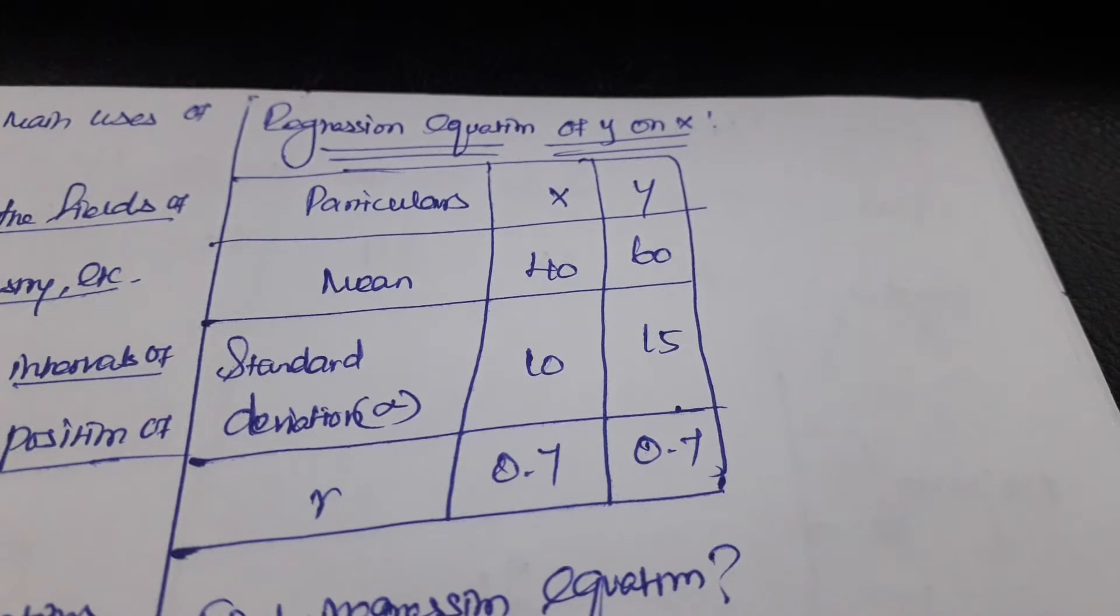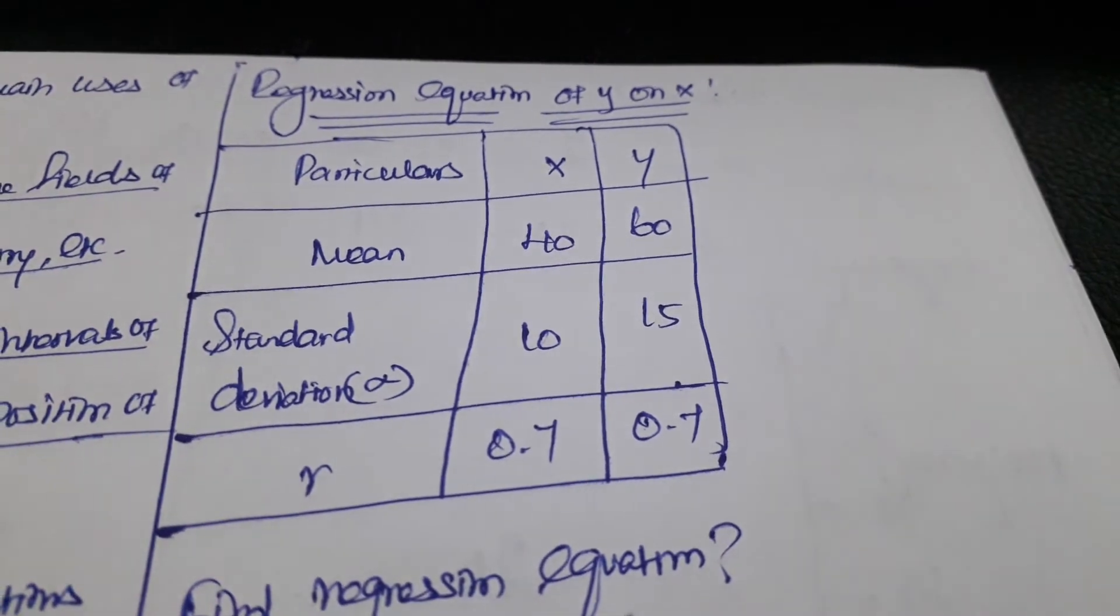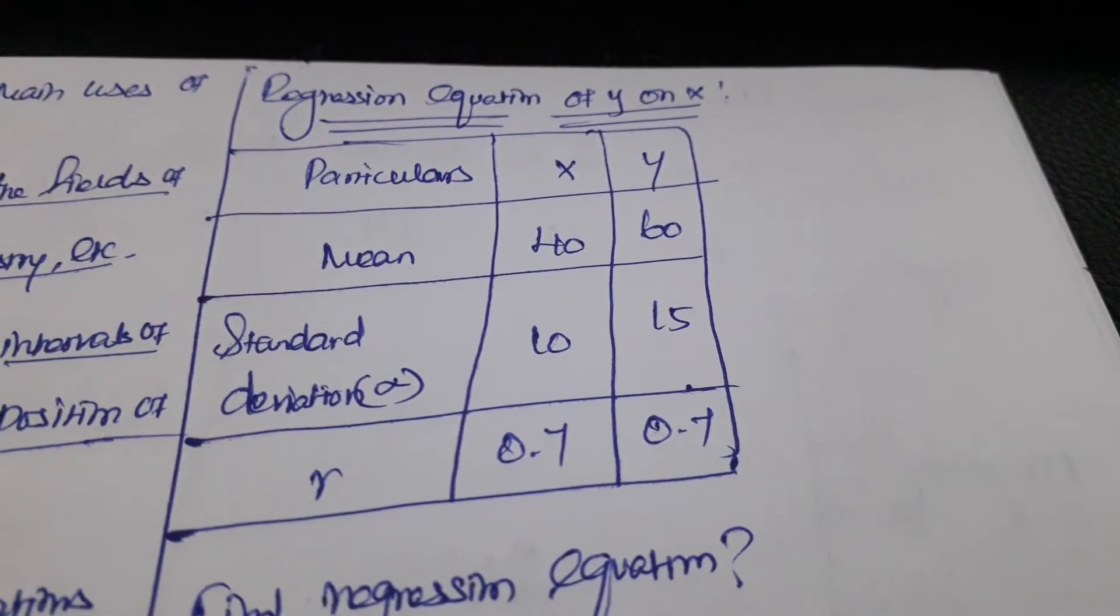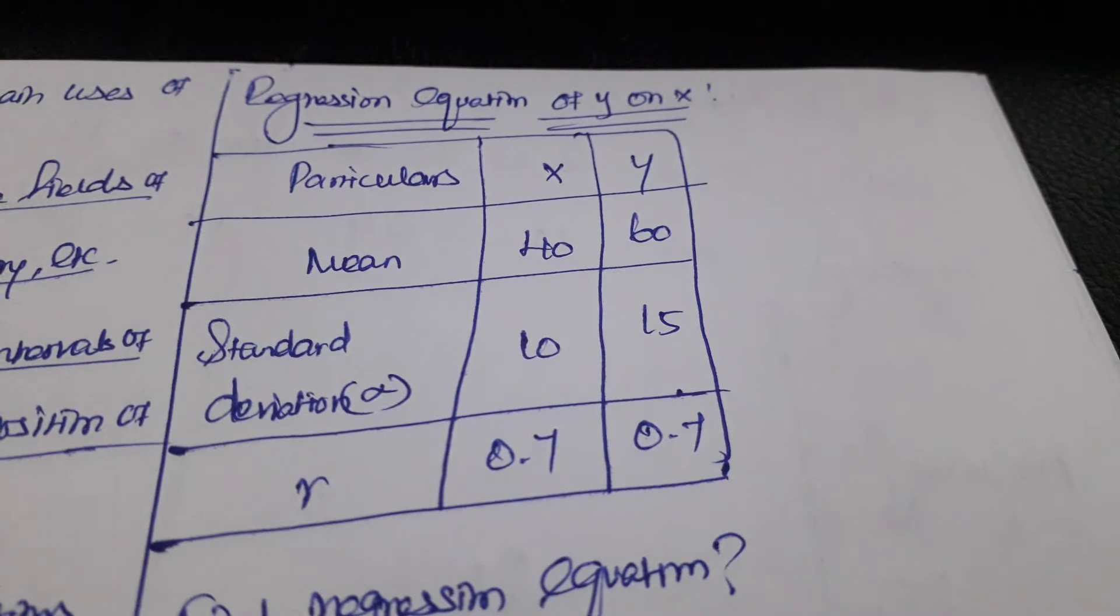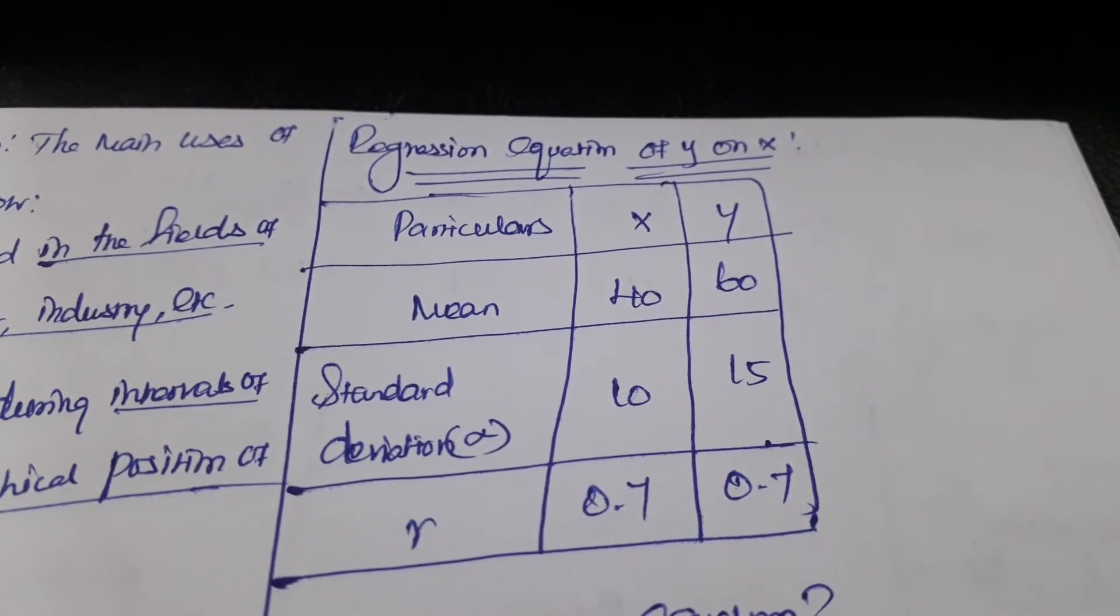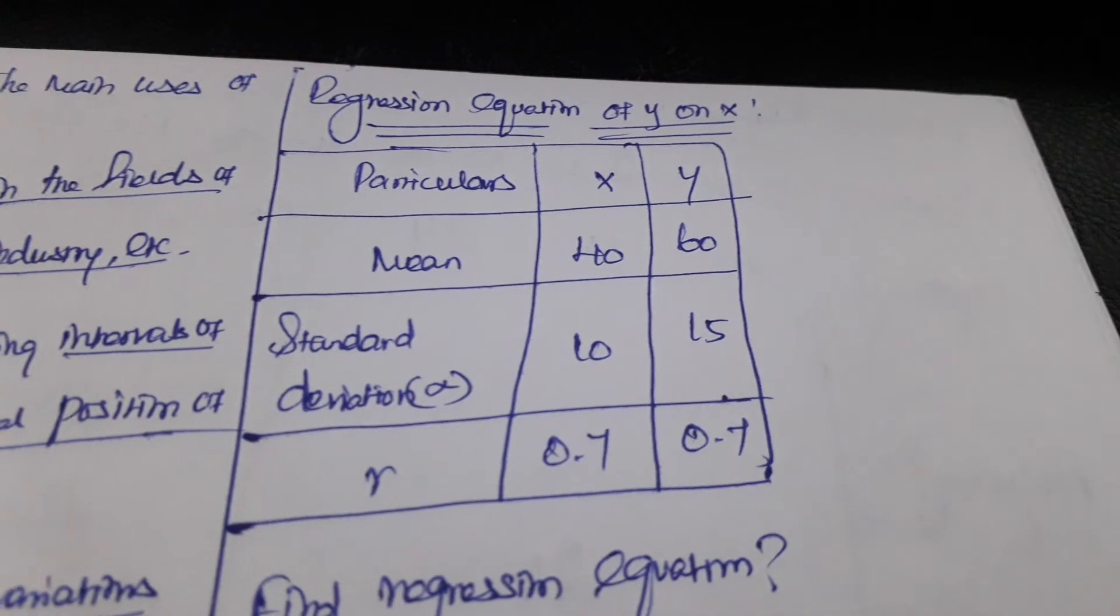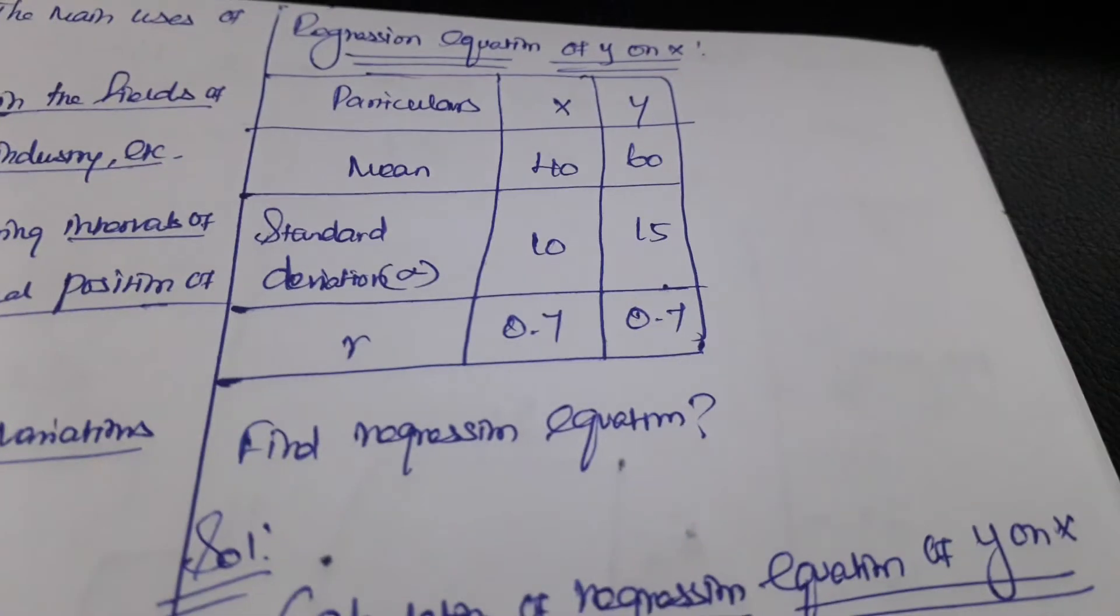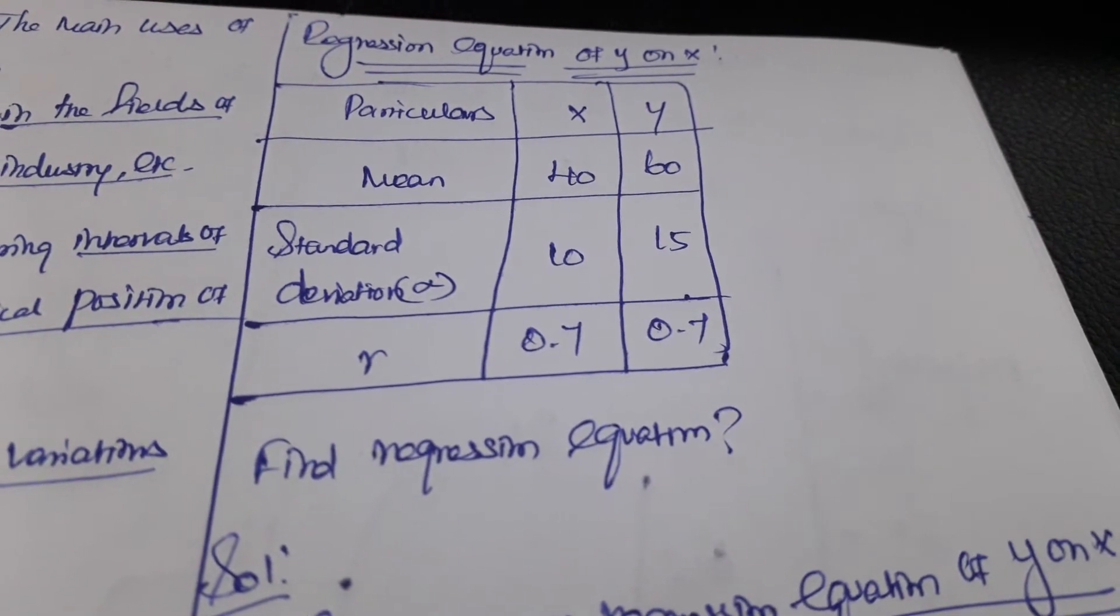The particulars are: mean X bar equals 40, Y bar equals 60, standard deviation sigma for X is 10, for Y is 15, and R equals 0.7. Here R means the correlation between the predictor values and the observed values.